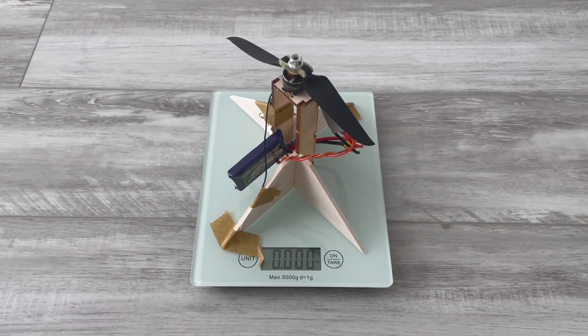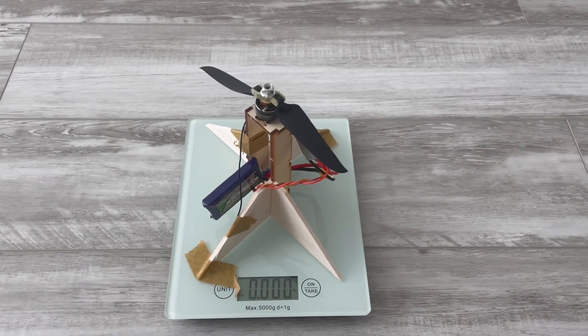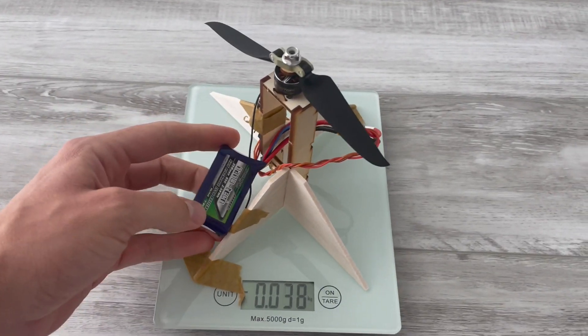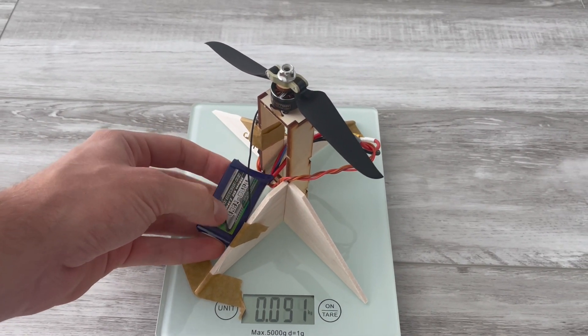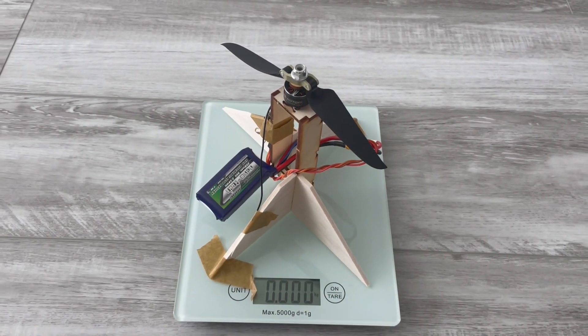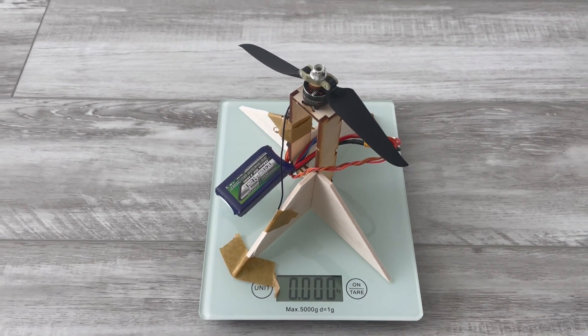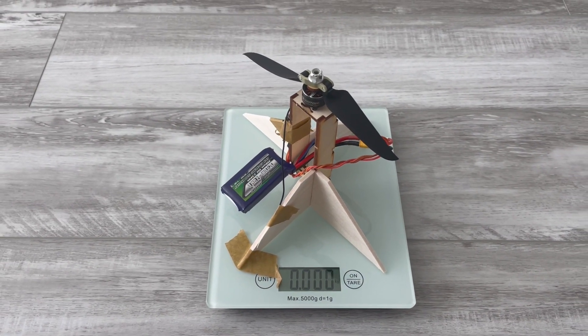So here you see it at full throttle with the freshly charged battery. If you get for example a 450 milliamp battery you can get slightly better results. If you get a higher C rate you can also get slightly better performance.